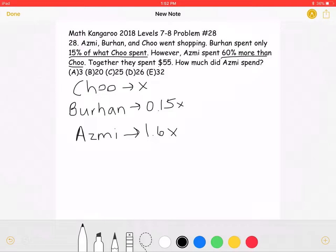It says that they spent $55 in total. This means that X plus 0.15X plus 1.6X must be equal to 55.